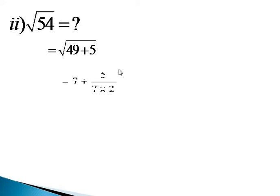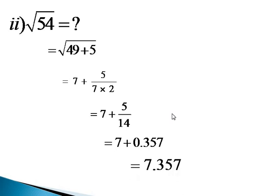Then the square root of 49 is 7, plus that 5 as it is. That 7 we multiply by 2. Lastly we get 7 plus 5 by 14. Then 7 plus 0.357, and lastly we get the answer 7.357.